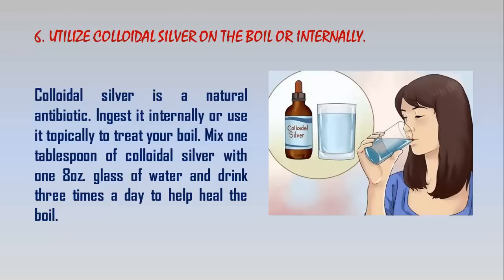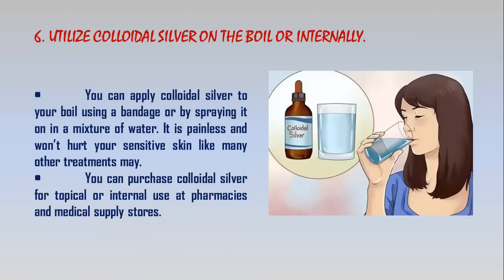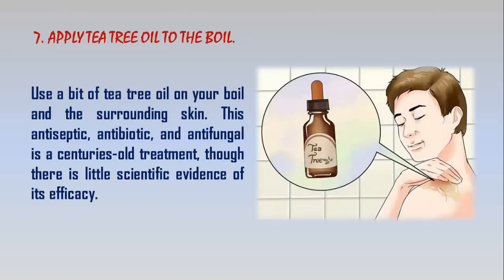Step 6 - Utilize colloidal silver on the boil or internally. Colloidal silver is a natural antibiotic. Ingest it internally or use it topically to treat your boil. Mix 1 tablespoon of colloidal silver with 8 ounces of water and drink three times a day to help heal the boil. You can apply colloidal silver to your boil using a bandage or by spraying it on in a mixture of water. It is painless and won't hurt your sensitive skin like many other treatments may. You can purchase colloidal silver at pharmacies and medical supply stores.